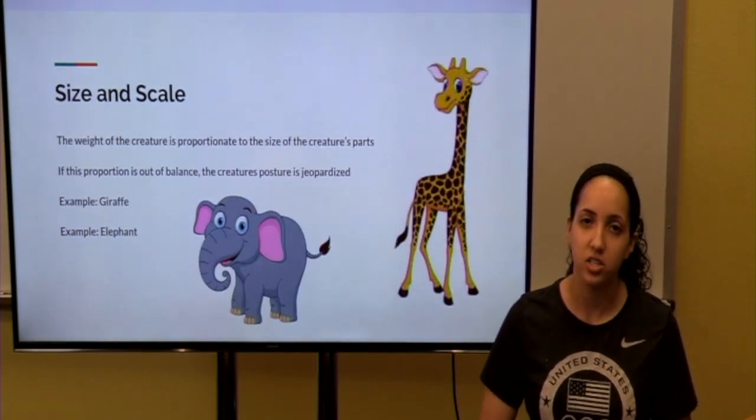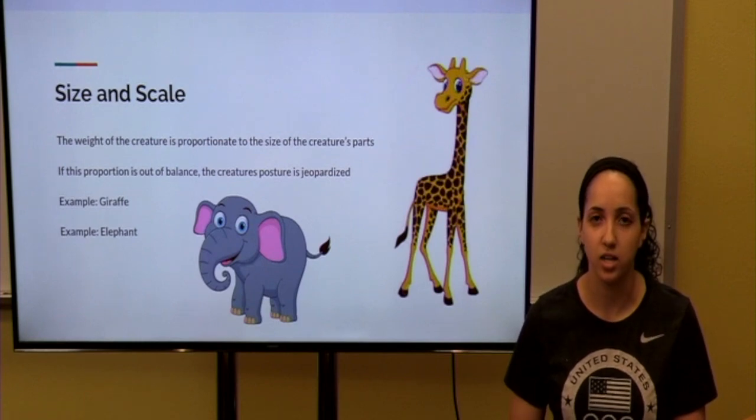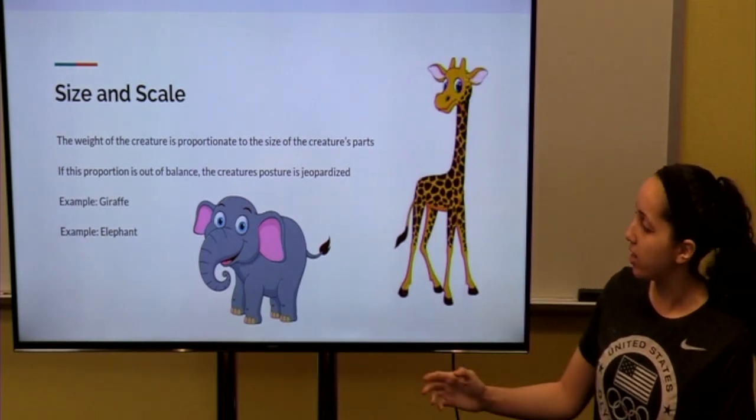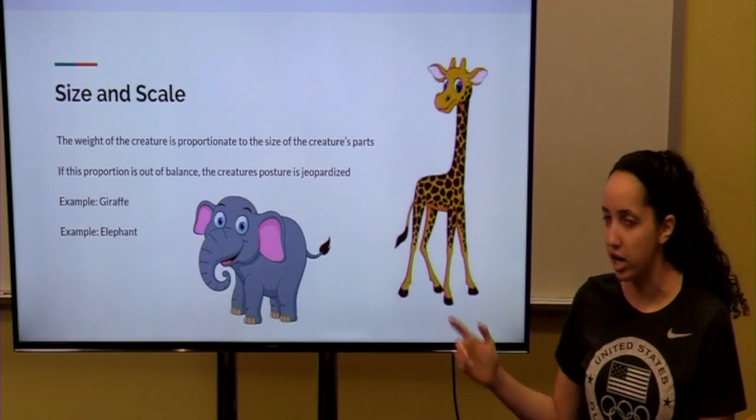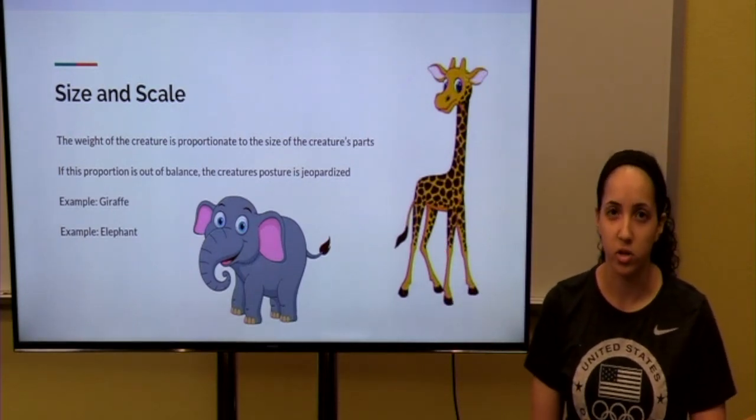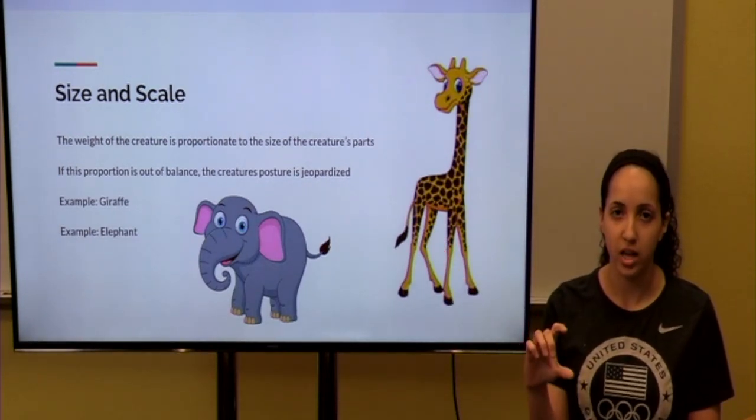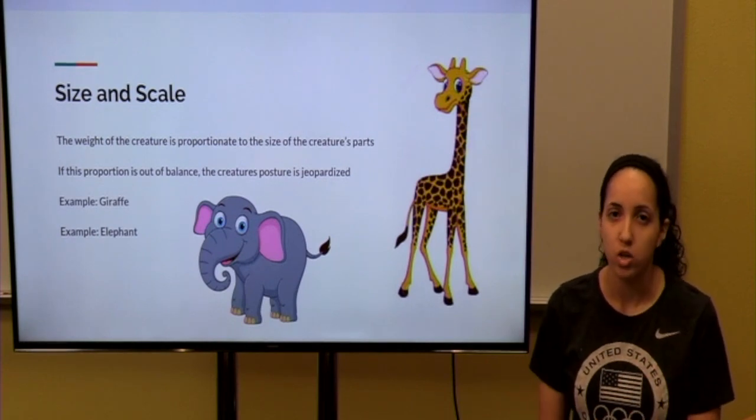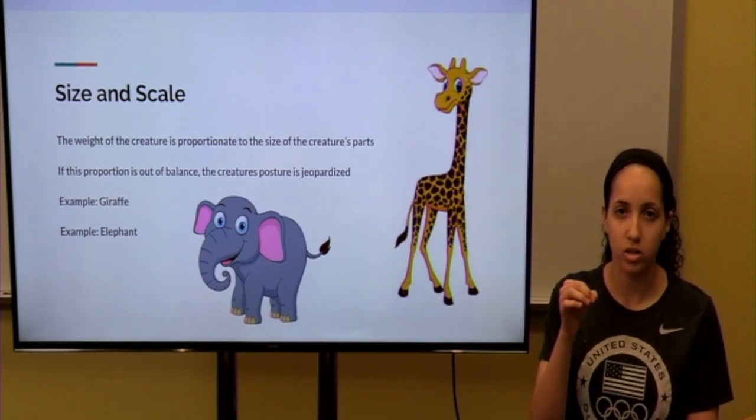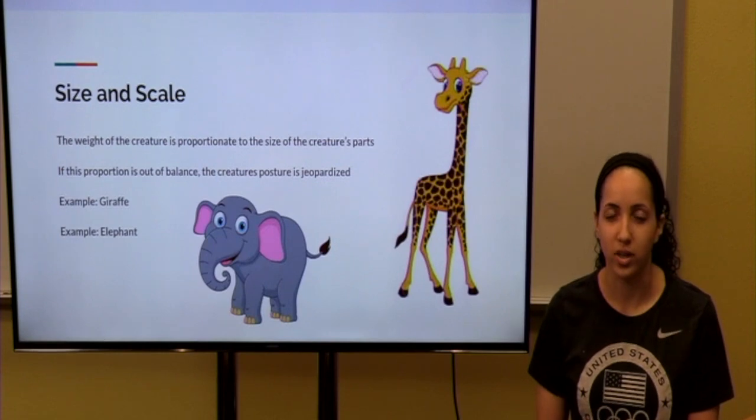When looking at skeletons, it's also important to consider size and scale. So, I have two examples of an elephant and a giraffe. Since elephants weigh more, they are able to have shorter legs that are wider to support their weight. Giraffes are lighter, so they can have long, thin legs that will support their lighter weight.